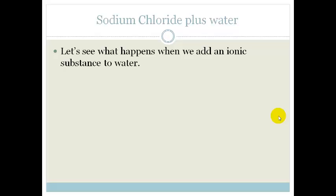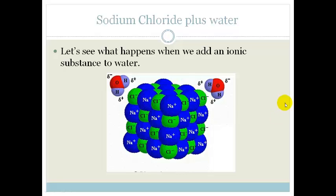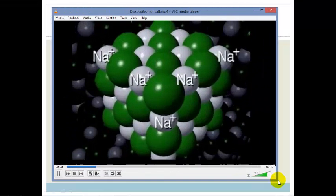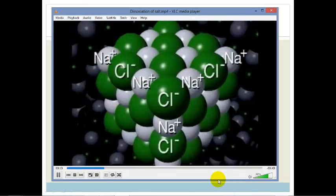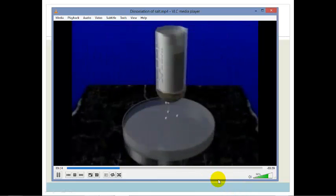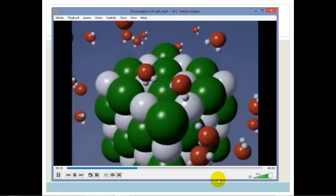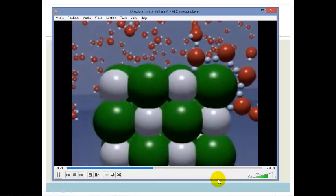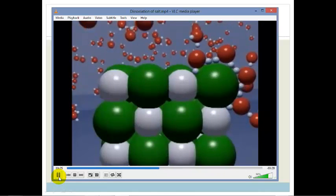Now let's see what happens when we add an ionic substance to water. Sodium chloride crystals are held together by attractive forces between the positively charged sodium and negatively charged chloride ions. When a crystal of sodium chloride is placed into water, the hydrogen ends of polar water molecules attract the negatively charged chloride ions and gradually surround them.